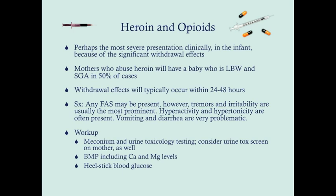The more irritable and hyperactive symptoms are prominent with opioid withdrawal: tremors, irritability, hyperactivity, increased deep tendon reflexes, hypertonicity, and even seizures. Vomiting and diarrhea are particularly problematic because opioids cause constipation, so withdrawal produces the opposite — diarrhea — which can significantly affect fluid status.